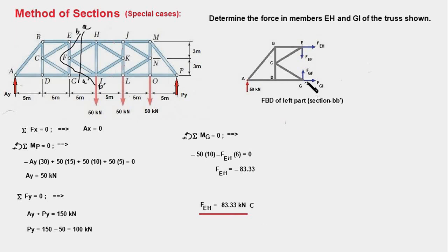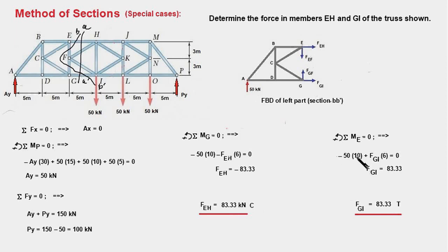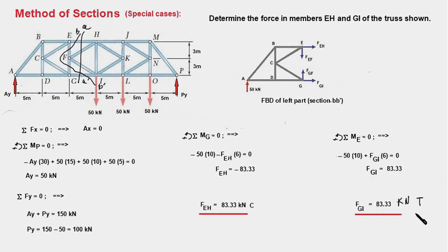Next we take the moment about point E. The moment of 50 kN about E is again −50 × 10, and the moment of FGI is anticlockwise with moment arm GE = 6 meters. So: −50 × 10 + FGI × 6 = 0, yielding FGI = 83.33 kN. The positive sign confirms this member is in tension. Therefore, the force in member EH is 83.33 kN compressive and the force in member GI is 83.33 kN tensile.